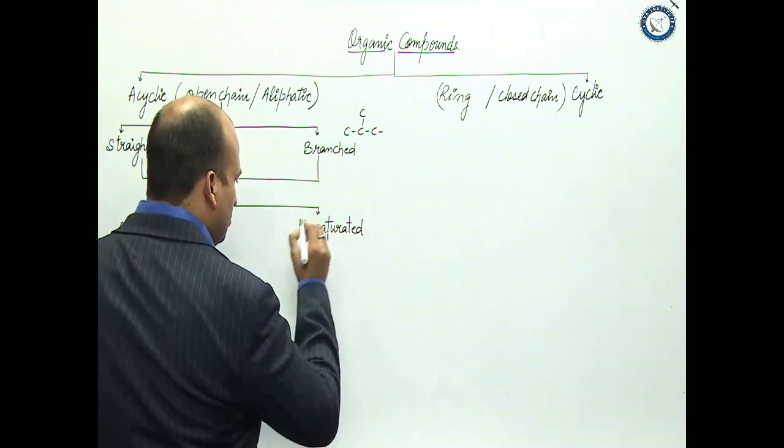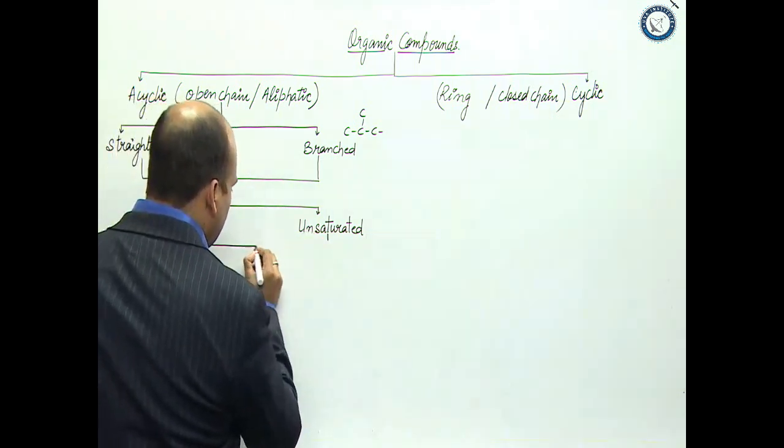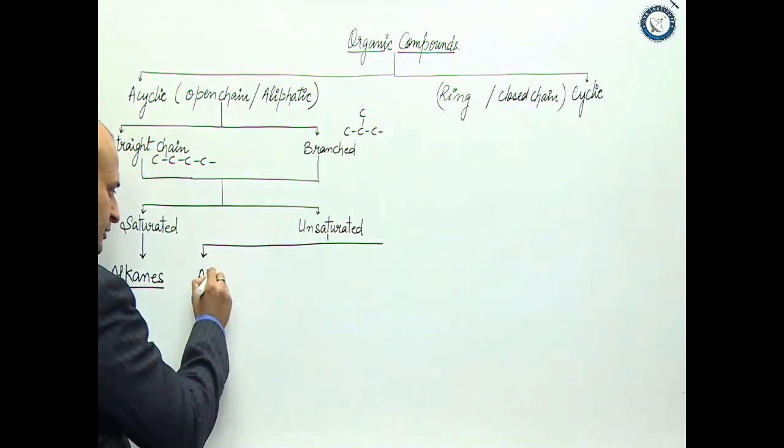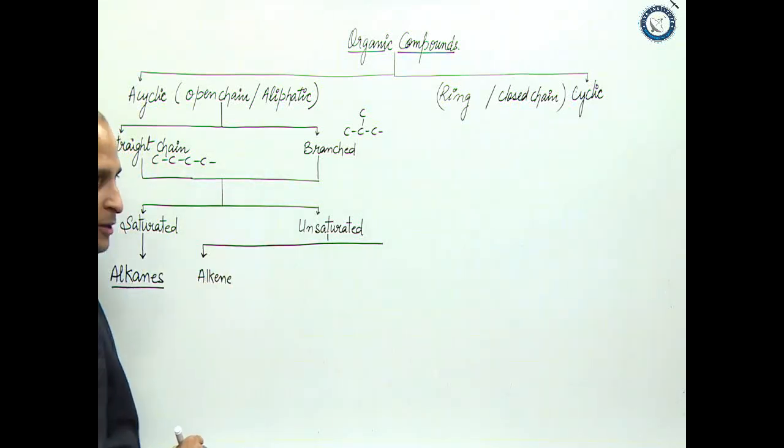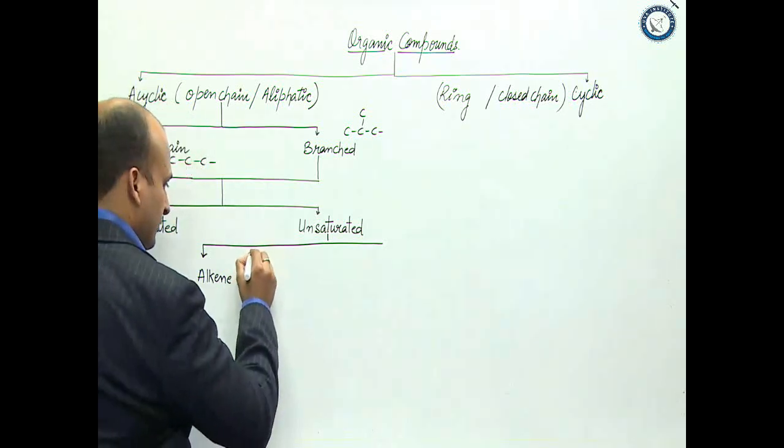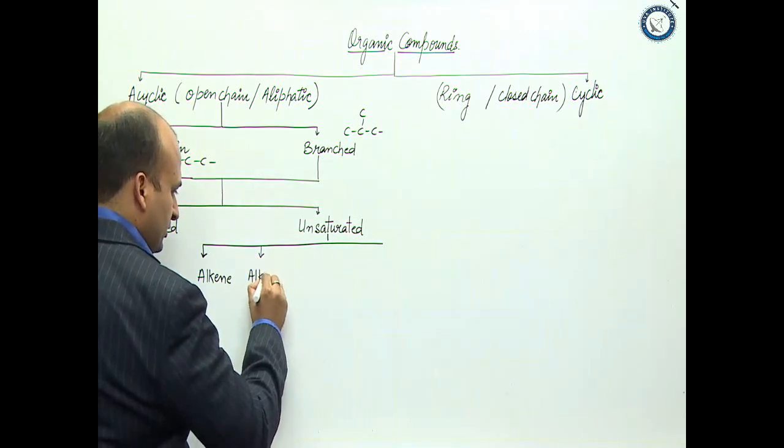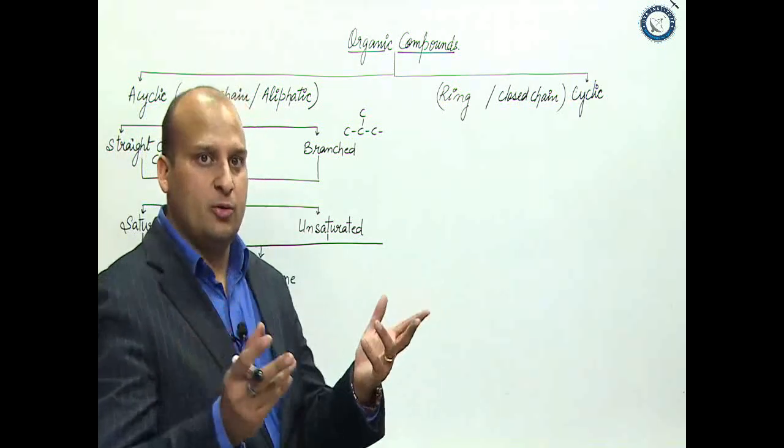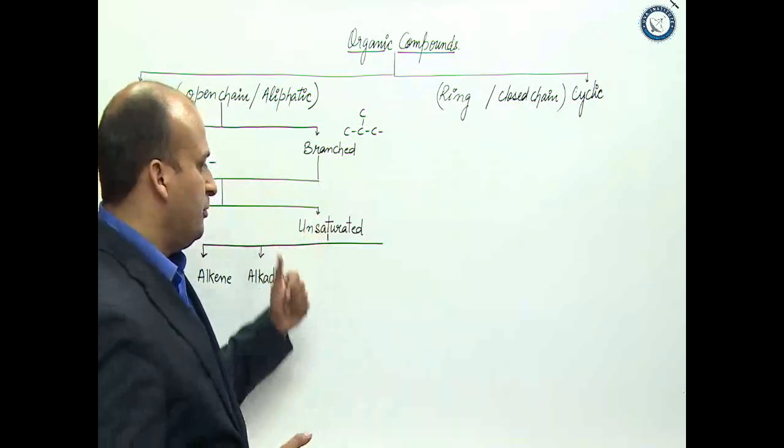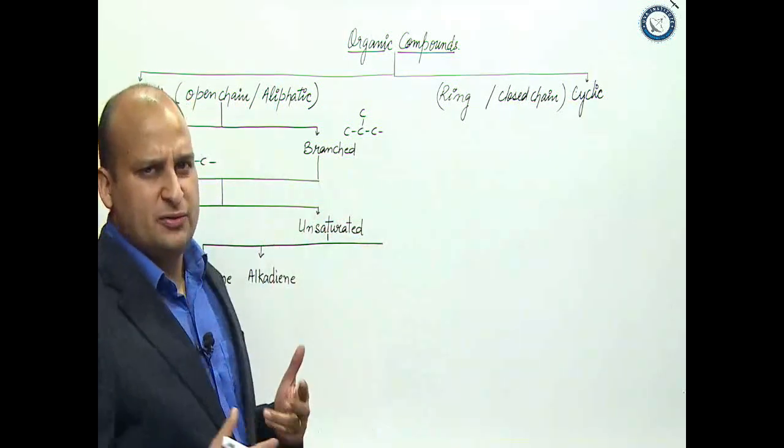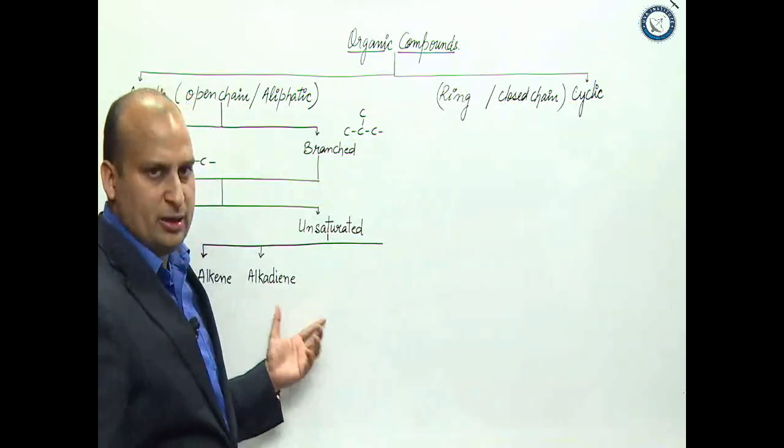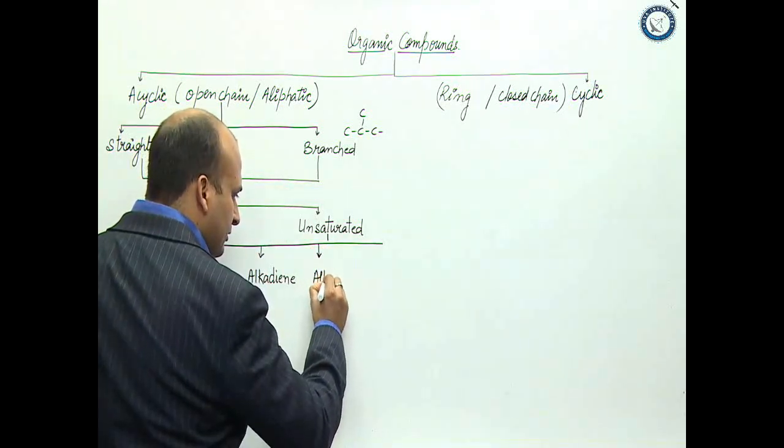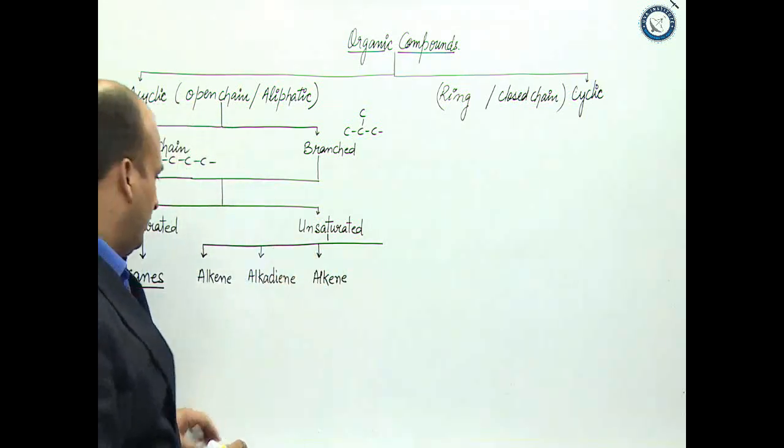When we talk about unsaturated, there are many possibilities. If there is only one double bond, we call it alkene. If there are two double bonds, then it is alkadiene. If there is one triple bond, then it is alkyne.